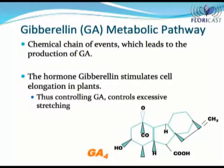The pathway is a chemical chain of events which leads to the production of GA. GA is a plant hormone which stimulates cell elongation in plants. Therefore, if you manage GA production, you will be able to manage plant growth.